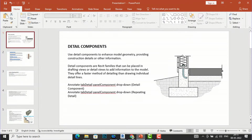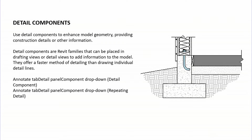Going to the definition of detail components — if you see this image, these are components: there is insulation, nuts and bolts, and foundation work. The definition states: use detail components to enhance model geometry, providing construction details or other information. Detail components are Revit families that can be placed in drafting views or detail views to add information to the model. They offer a faster method of detailing than drawing individual detail lines.